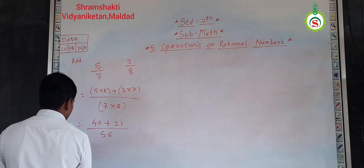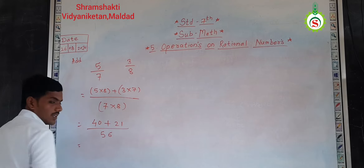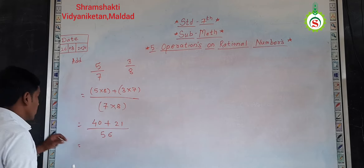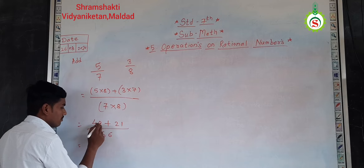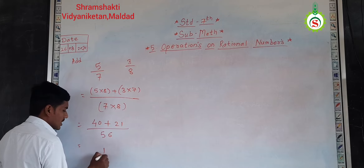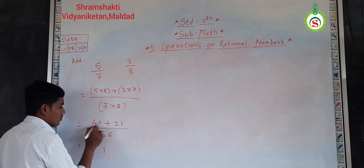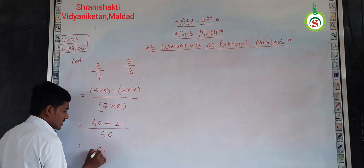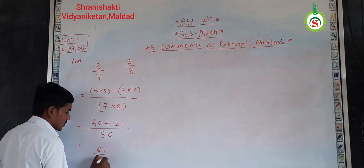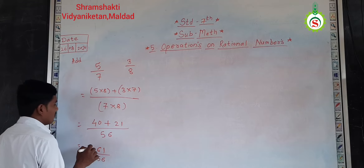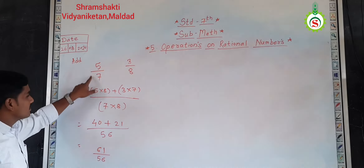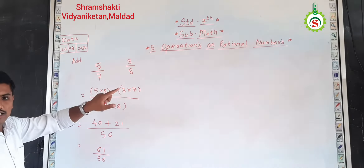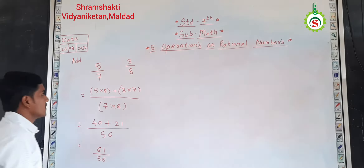Fifty, six. So, here I am going to add: one plus zero is one, two plus four is six. So, sixty-one by fifty-six is nothing but the addition of the two rational numbers.